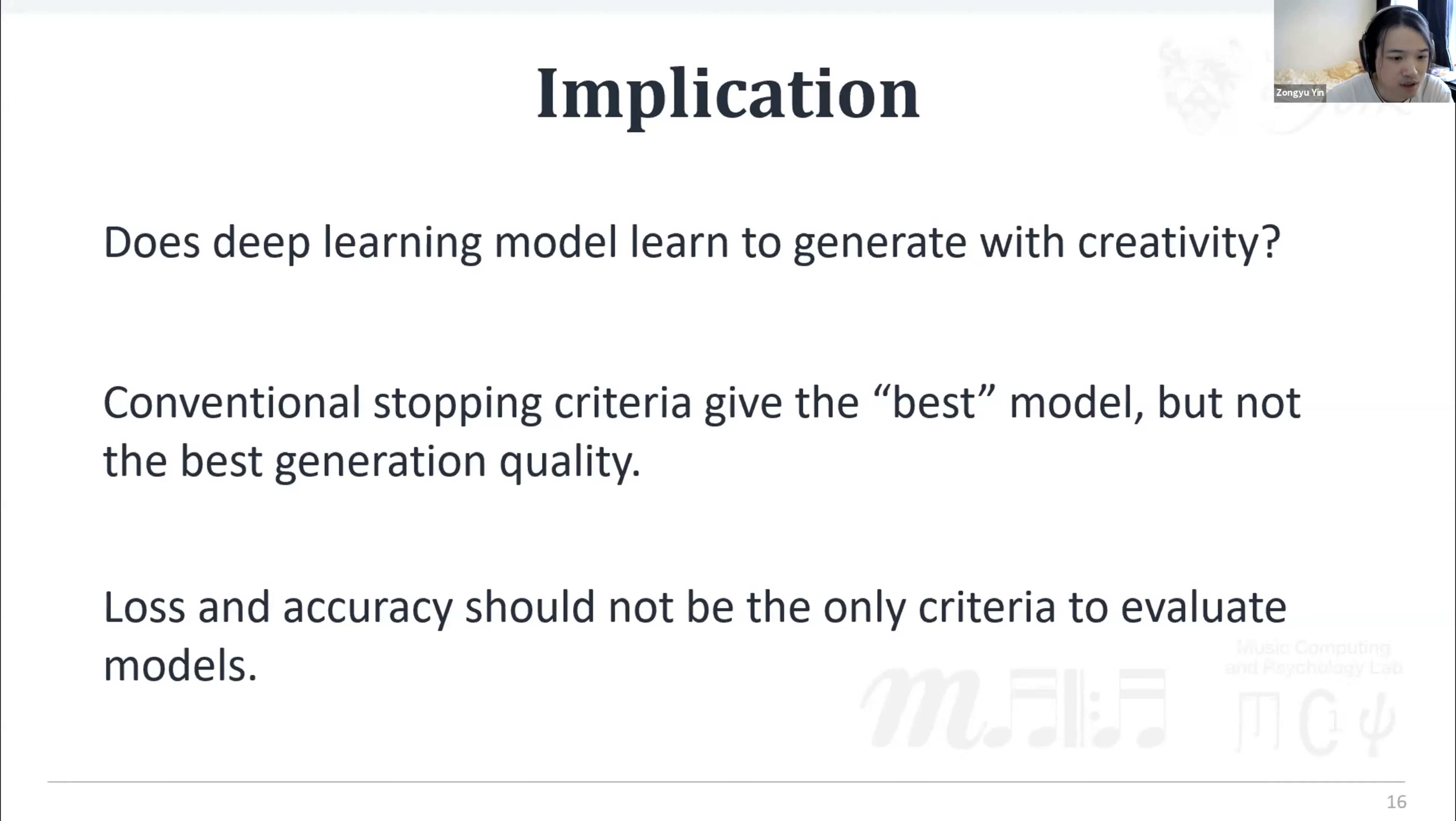Going forward, the research on music generation with deep learning needs to reconsider in what situations the conventional stopping criteria are appropriate. Perhaps loss and accuracy should no longer be the only criteria when evaluating the model because we need to prevent this model copying training data, especially when they are used increasingly in a black box manner by practicing musicians.